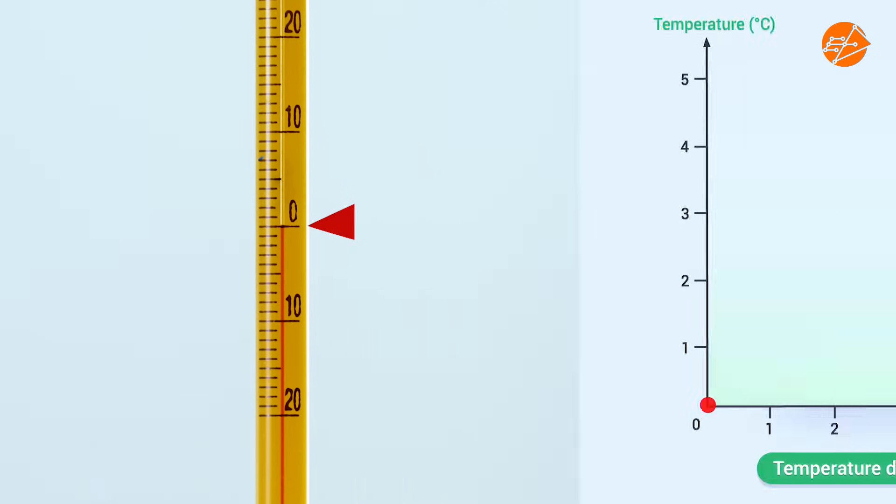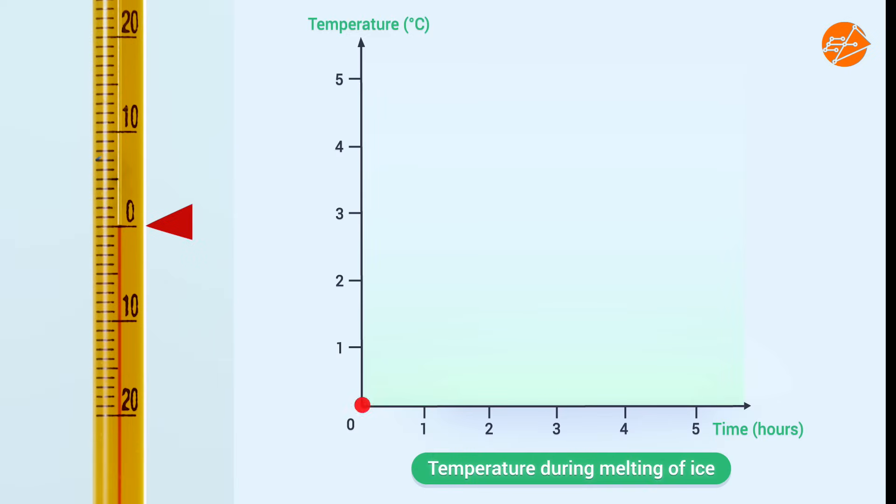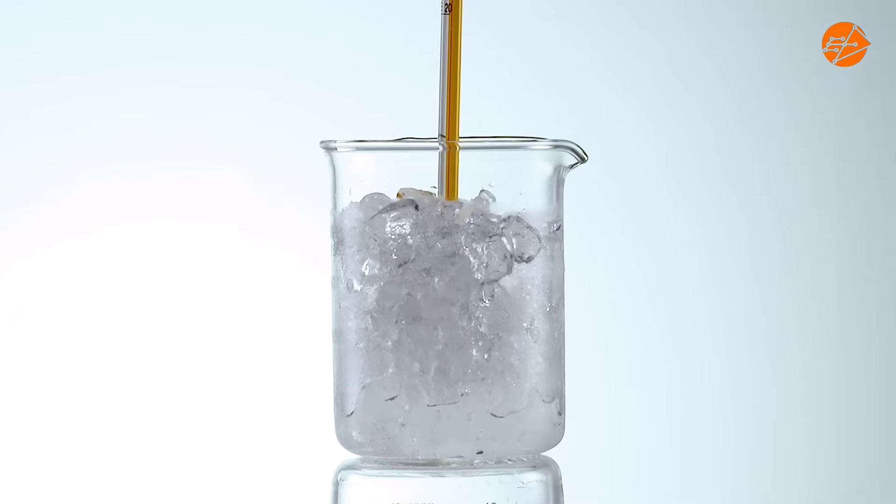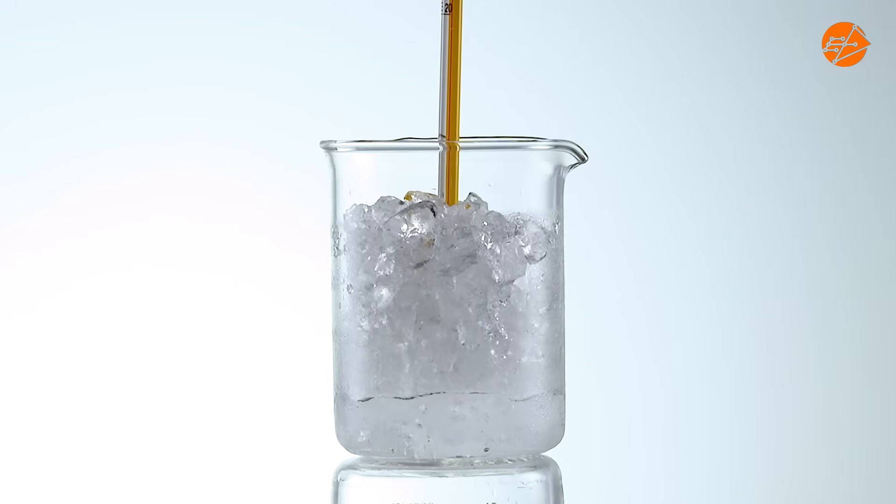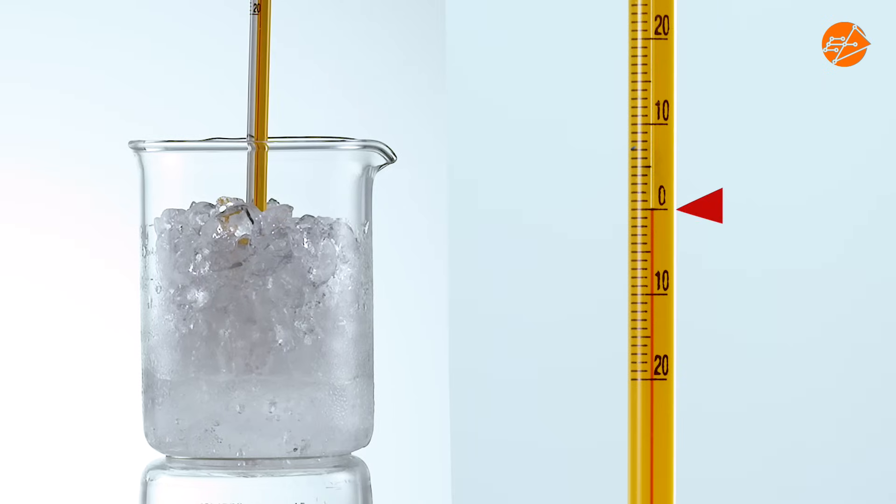Let's put this on a graph. The ice gains heat from the surroundings and starts to melt. The temperature remains at 0 degrees Celsius.